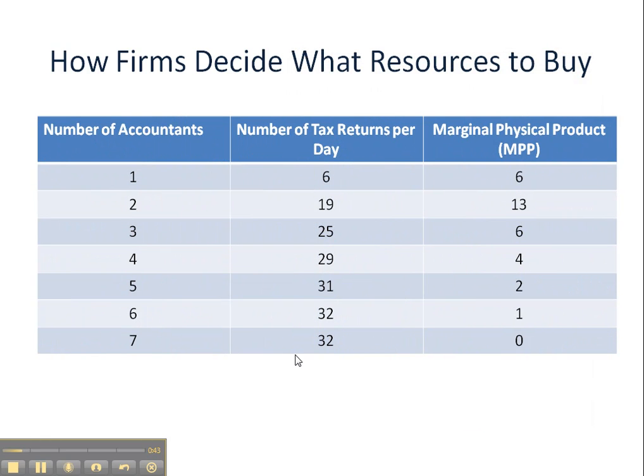The first thing we're going to do is take a look at a resource schedule. This is an accounting firm deciding how many accountants it should employ, and we see that in the left-hand column.